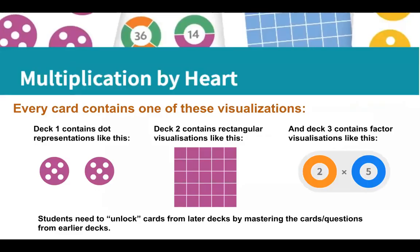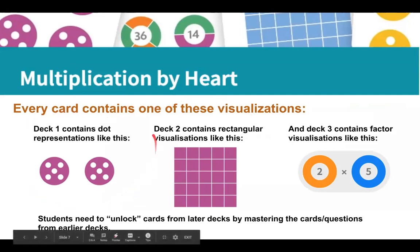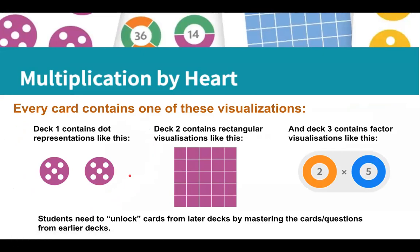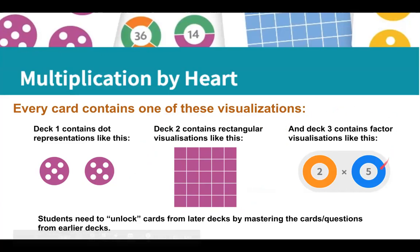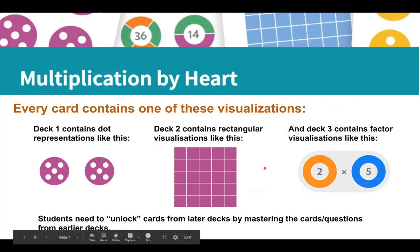Every card in Multiplication by Heart contains one of these visualizations. Deck one is dot representations — equal groups, as from unit 3.3. Deck two contains rectangular visualizations, which is the array model of multiplication with rows and columns. Deck three is the factor visualization with just the numbers, like two and five. Students need to unlock cards from later decks by mastering the cards and questions from earlier decks.